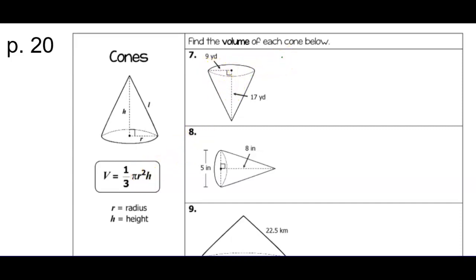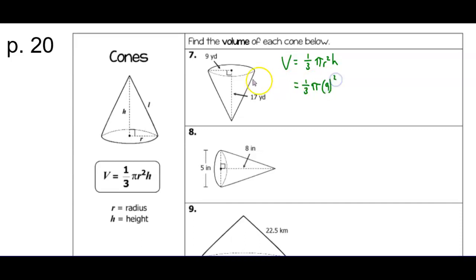For example seven, the formula is one-third times pi times r squared times h. This is the same as the pyramid formula since pi r squared is the base area. The radius is 9 and the height is 17 — that height must be perpendicular to the circle base. Putting all that into the calculator gives a volume of 1,441.99 cubic yards.